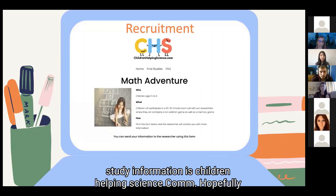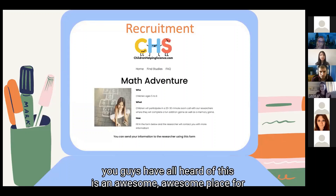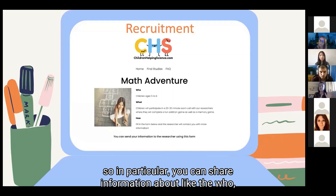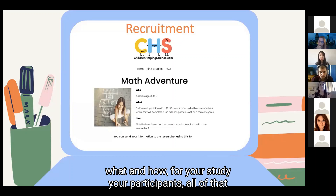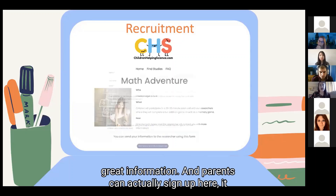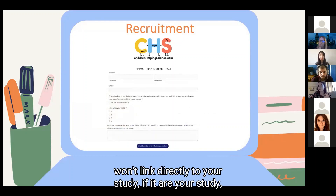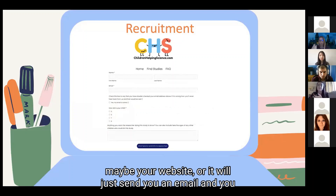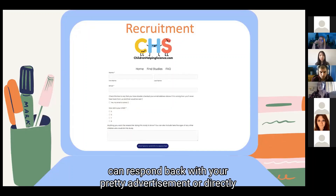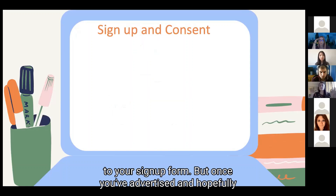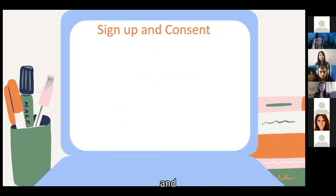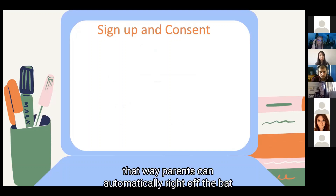Another great place to share your study is ChildrenHelpingScience.com — an excellent resource where you can share information about the who, what, and how of your study. Parents can sign up there, though it won't link directly to your Qualtrics study signup; it will send you an email and you can respond with your advertisement or signup form link. The goal is to make signing up as easy as possible — the easier you make it, the better.